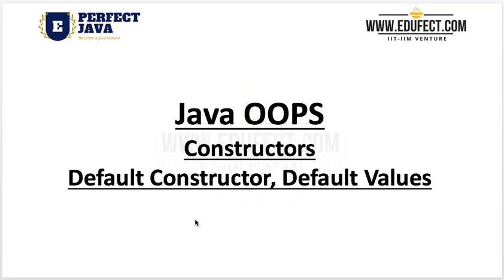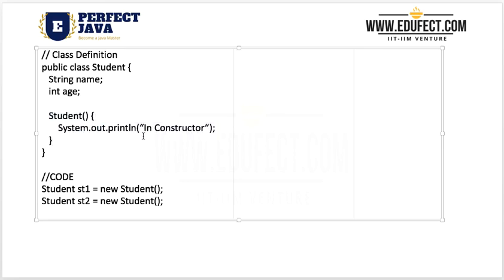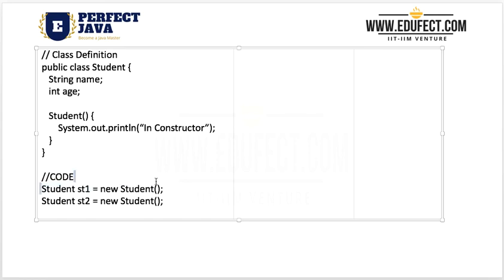In this lesson we will learn about constructors. Here we have defined a class Student which has two member variables: a String with the name 'name' and an int with the name 'age'. We have also defined a constructor — written as 'Student()' with a body containing System.out.println('in constructor'). This whole code is the definition of the class Student.